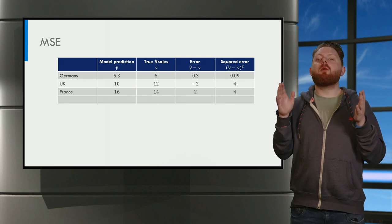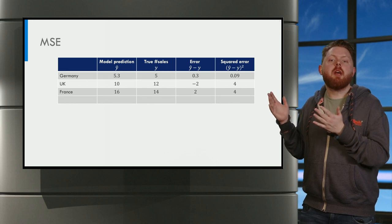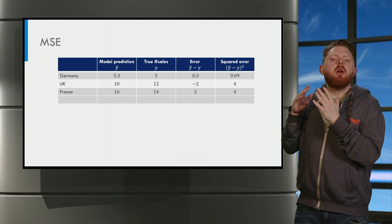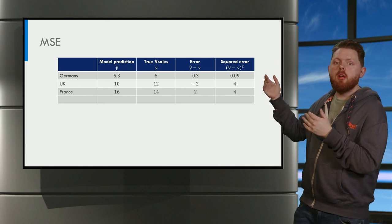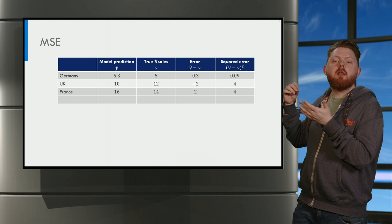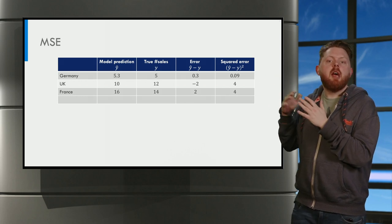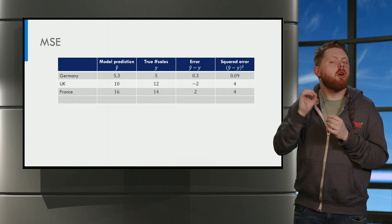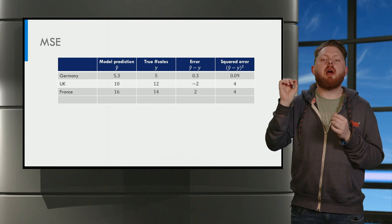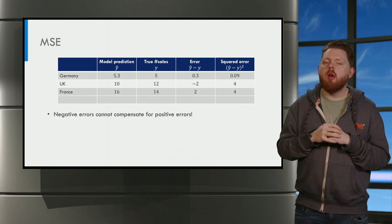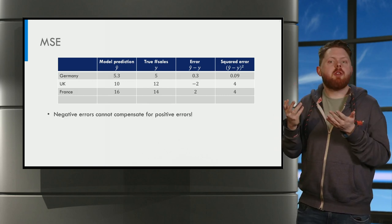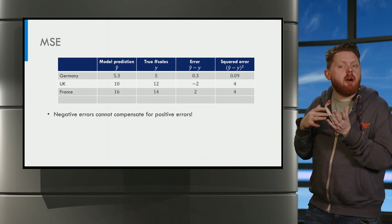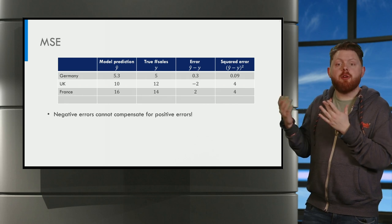Well, what people often do is take our errors and square them before averaging. You can see the squared error in the fourth column: 0.3 squared gives us 0.09, and minus 2 squared gives us 4, and 2 squared is also 4. So notice the squared error is always positive. Thus if we average these errors they will not cancel out anymore. Negative errors cannot compensate for positive errors anymore.